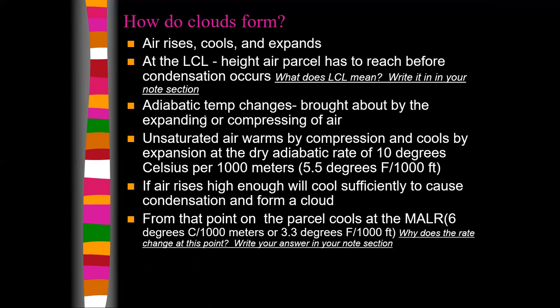From that point on the parcel will cool, but at the lower moist adiabatic lapse rate. You'll see abbreviations like MAR and MALR — they all refer to the same thing. The dry adiabatic lapse rate abbreviations also vary, so don't get confused. The moist adiabatic lapse rate is 6 degrees Celsius per 1,000 meters, or about 3.3 degrees Fahrenheit. That rate changes because condensation is taking place, and condensation is a warming process.